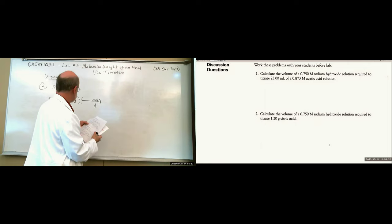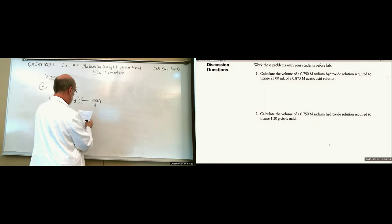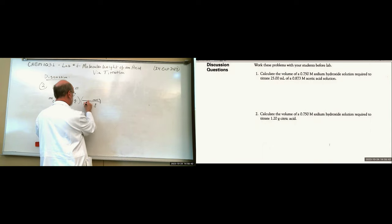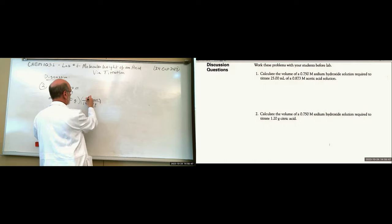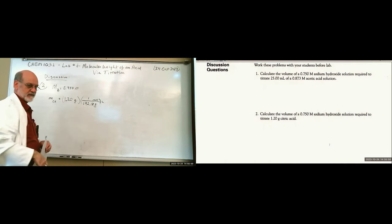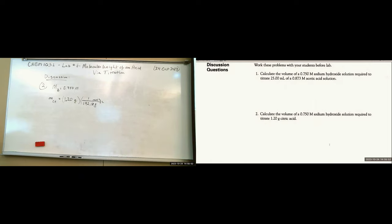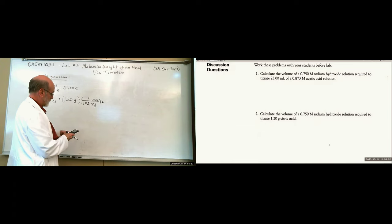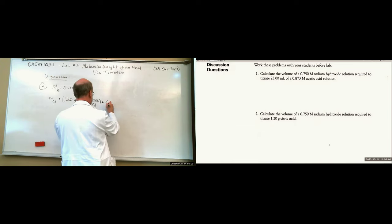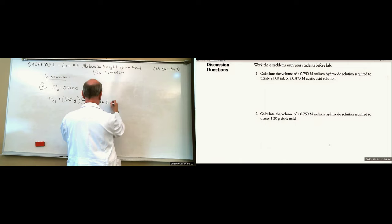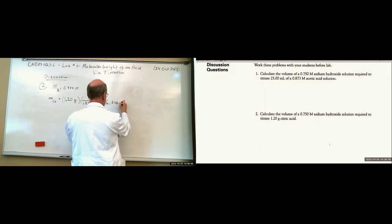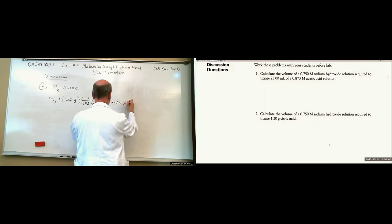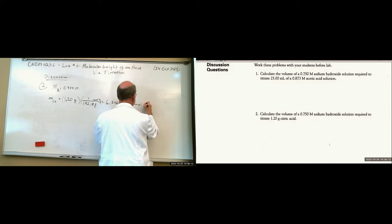The accepted value of citric acid molar mass is 192.13 grams per mole — it's a big molecule. So: 1.20 divided by 192.13 gives 6.246 × 10⁻³ moles of citric acid.